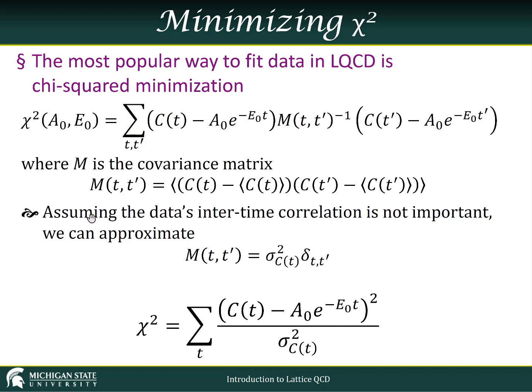If we could assume that correlation is not important, that is there aren't significant correlations, the correlators are independent at different times, then we can just approximate this function, the covariance matrix, as the variance. Great, so that should look familiar. And so our chi-squared becomes the difference of the model from the data squared divided by the error bars.